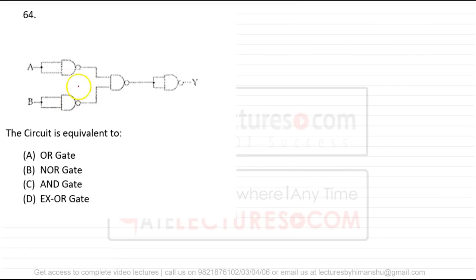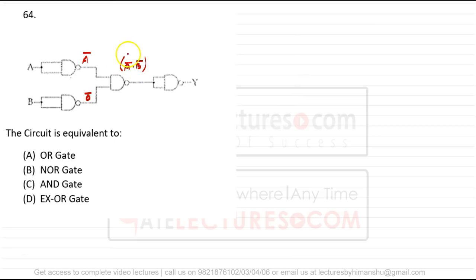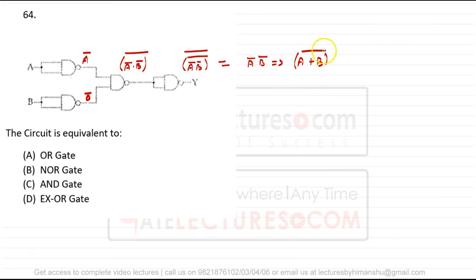Question 64: we have a circuit with NAND gates and must find the output at Y. Input A fed to both inputs of a NAND gate gives Ā; similarly B gives B̄. Ā·B̄ fed into a NAND gives (Ā·B̄)' = A+B by De Morgan's. The final NAND gives (A+B)' — which is a NOR gate. So the answer is B: NOR gate.